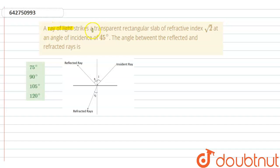A ray of light strikes a transparent rectangular slab of refractive index root 2 at an angle of incidence of 45 degrees.